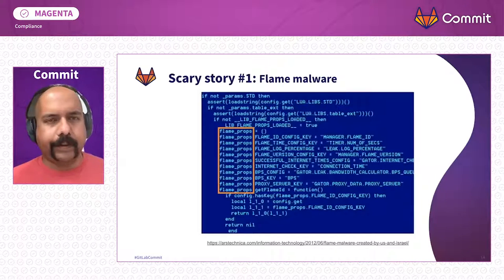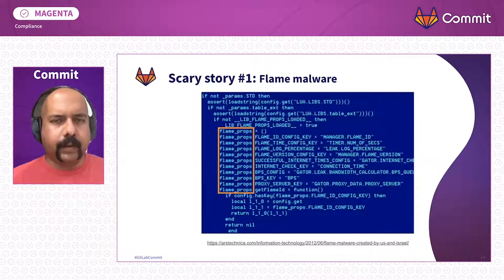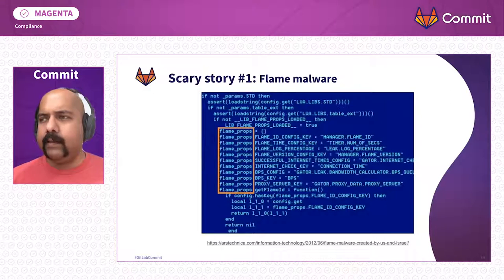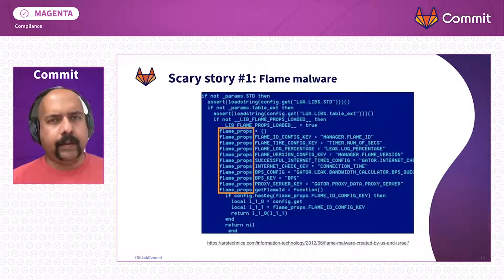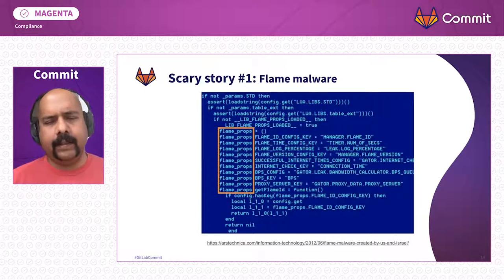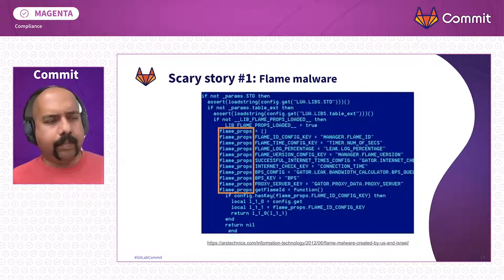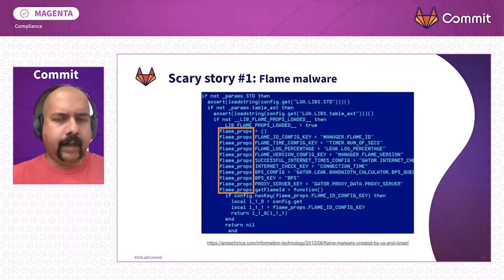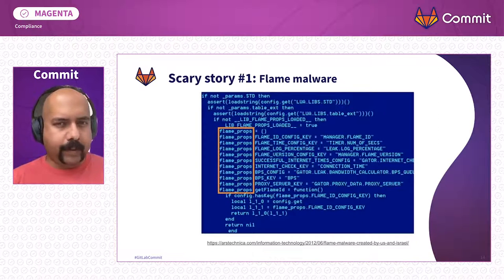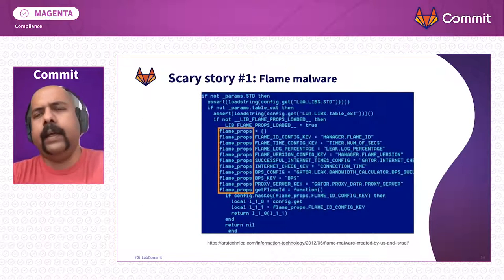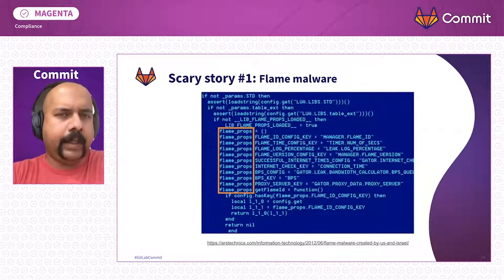Scary story number one: the Flame malware from 2012. Someone — many suspect a nation-state attacker — pretended to be Microsoft. They wanted to dismantle Iran's nuclear program. They broke a poor hashing algorithm called MD5 that was used back then, finding a novel cryptographic attack that even academics had not seen before. They produced a fake certificate that looked like it came from Microsoft, propagated an update all the way to Iran where it caused centrifuges to very subtly mess up. We're not playing with amateurs here.